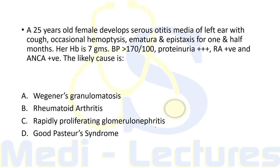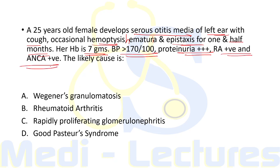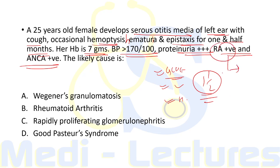Diagnosis is made by skin biopsy, and the response to steroids is excellent, giving an excellent prognosis. Practice question: A 25-year-old female develops serous otitis media (glue ear), cough, occasional hemoptysis, hematuria, and epistaxis for one and a half months. Hemoglobin is 7g, BP is more than 170/100, proteinuria 3+, RA factor positive, ANCA positive. This is a typical picture of Wegener's Granulomatosis — with glue ear, lung involvement (hemoptysis), renal involvement (hematuria, hypertension, proteinuria, RPGN), and positive ANCA.